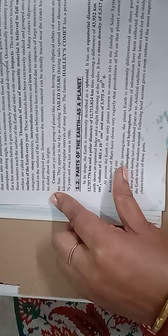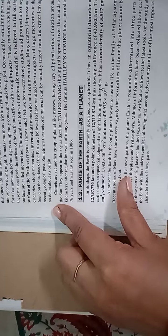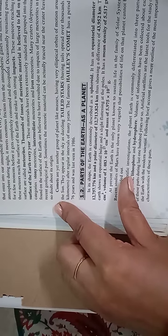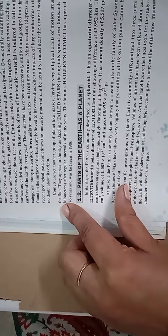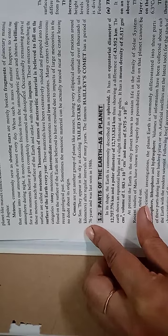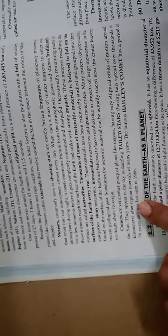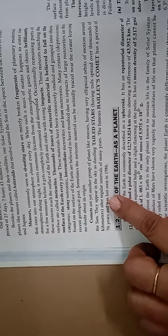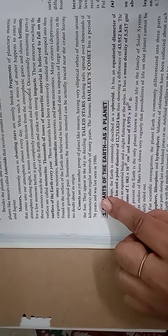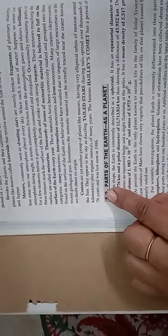Comets are yet another group of planet-like masses having very elliptical orbits of motion around the Sun. They appear in the sky as dazzling tailed stars, with tails spread over thousands of kilometers. After regular intervals of many years, they reappear. The famous Halley's Comet has a period of 76 years and was last seen in 1986.